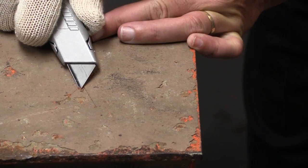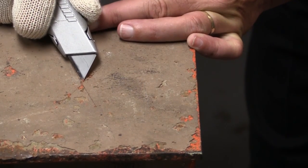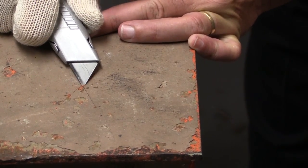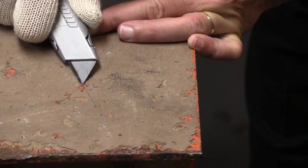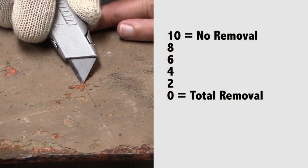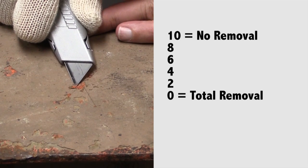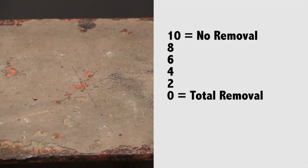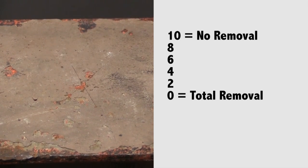ASTM D6677 involves cutting an X through the coating and probing at the cross-section. The ease of removal is rated subjectively on a 0 to 10 scale, with 10 being no removal.